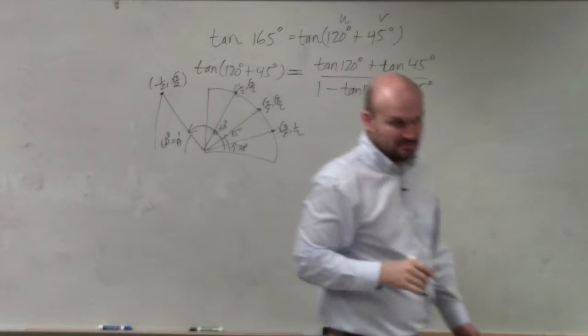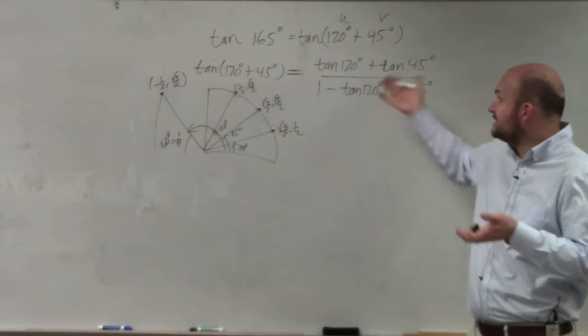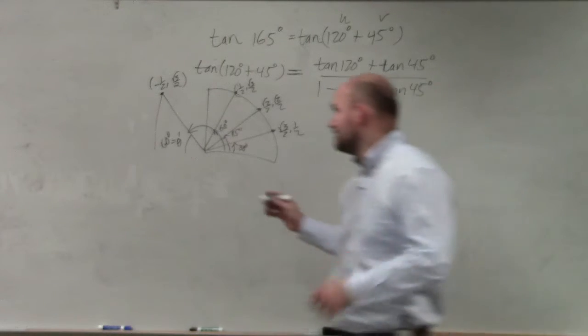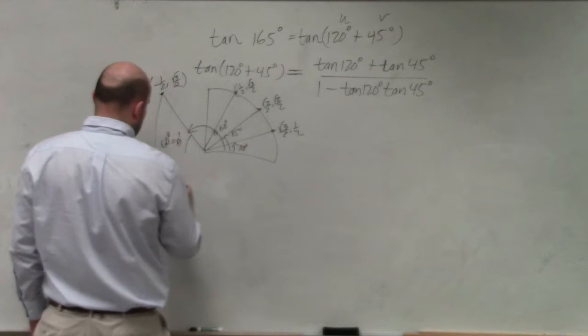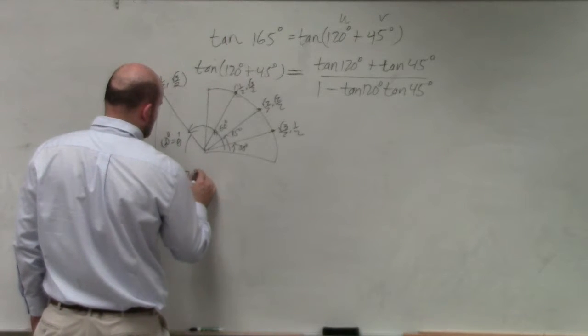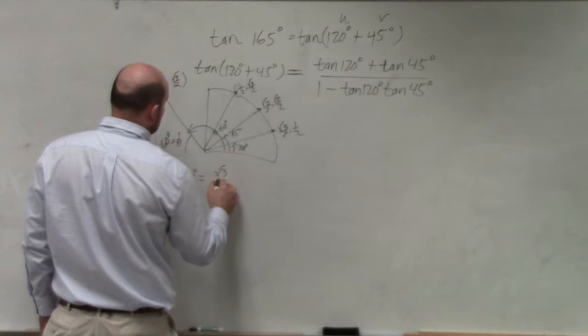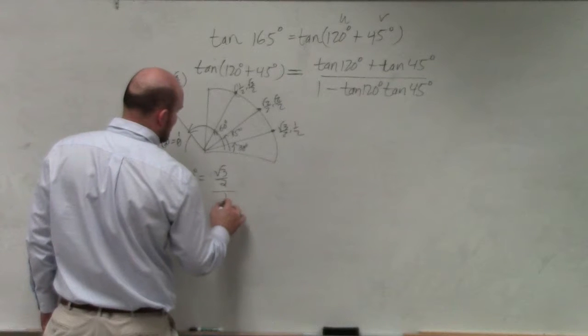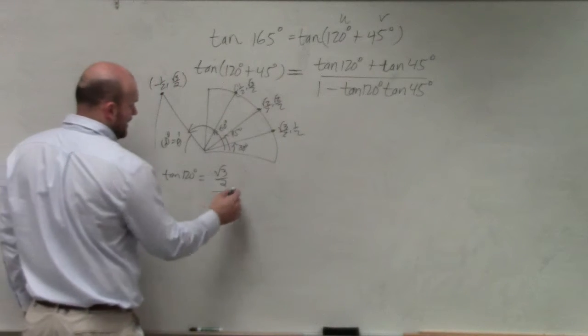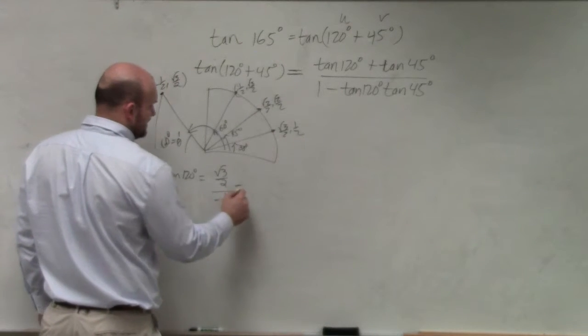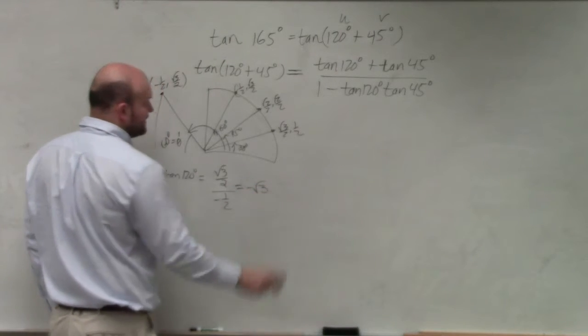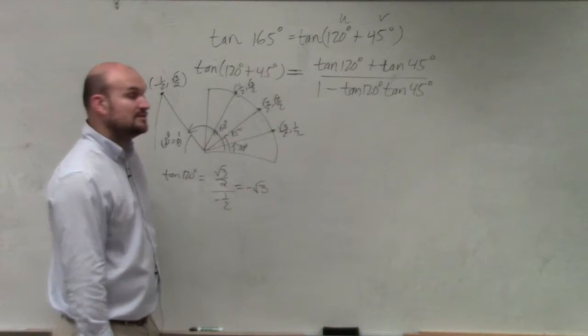Yes? So tangent is going to be negative, or the tangent of 120 is going to be negative. So let's figure out what that would be. The tangent of 120 degrees is going to be the y-coordinate, square root of 3 over 2, divided by negative 1 half. So that leaves me with negative square root of 3. So now let's plug them in.